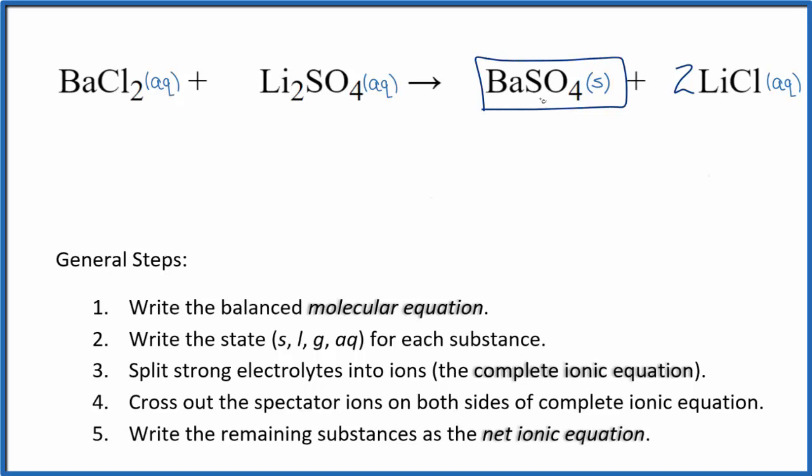Barium sulfate is insoluble. When these two substances react, we get barium sulfate and lithium chloride, the solid, and falls to the bottom of the test tube as a precipitate. So we have our states.